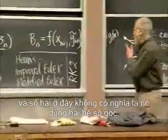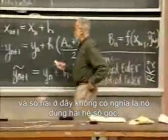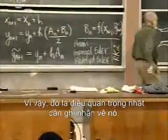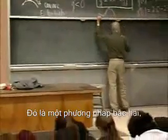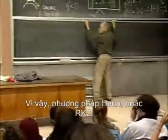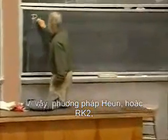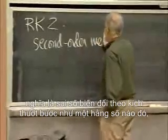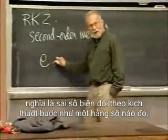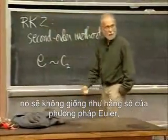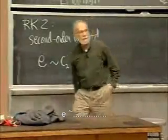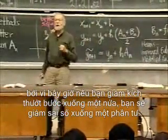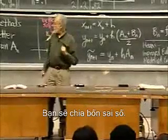And it's also called RK2 — I'm sure you'll like that name best, it has a Star Wars sort of sound to it. RK stands for Runge-Kutta. The reason for the '2' is that it uses two slopes, but the real reason is that it is a second-order method, whereas Euler's was only a first-order method. So RK2 is a second-order method, meaning that the error varies with step size like some constant times H squared. That's a big saving — if you halve the step size, you quarter the error.